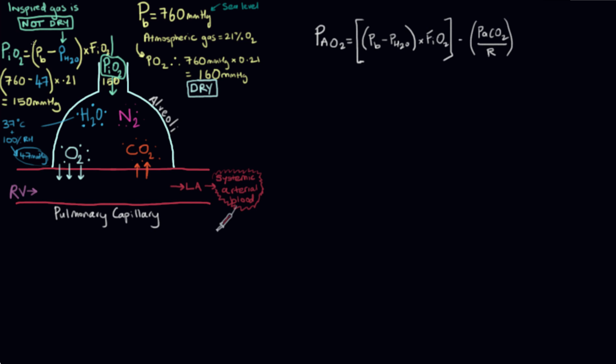So we need to factor in the pressure that water vapor is going to exert in the gas. That's what we've done here. Before I just said we subtract that and left you with it, but now we're going to actually subtract the number. At 37 degrees Celsius body temperature and 100 percent relative humidity, water vapor exerts a pressure of 47 millimeters of mercury.